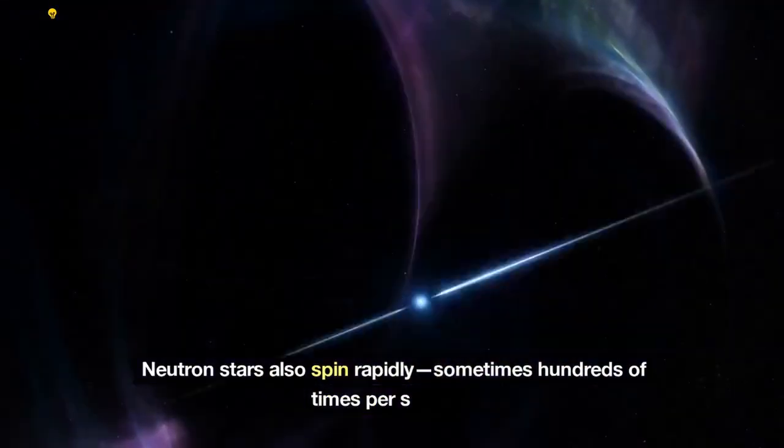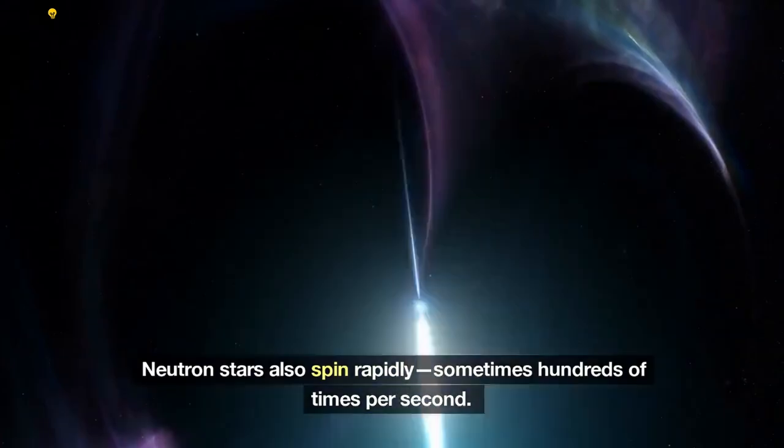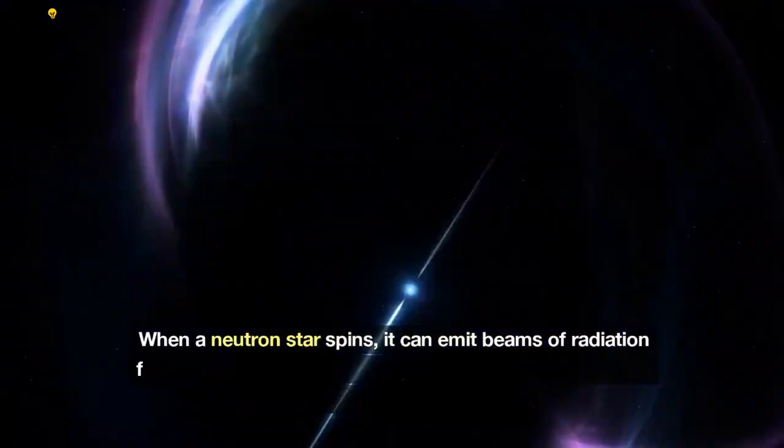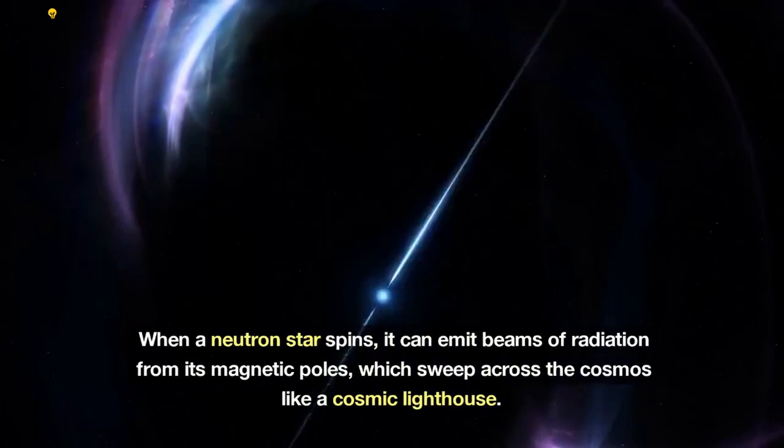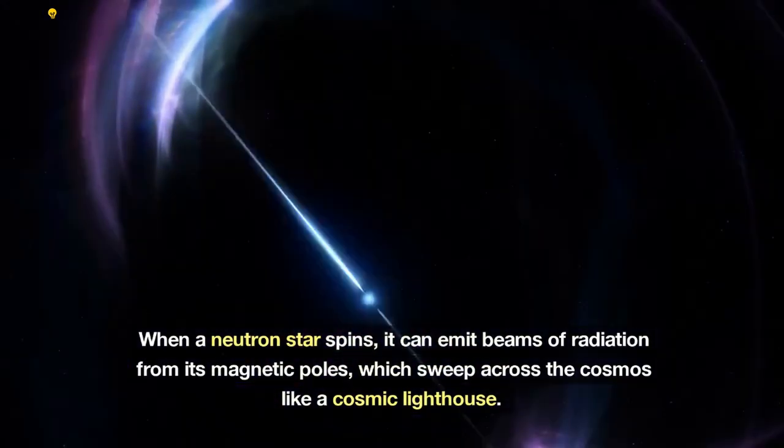Neutron stars also spin rapidly, sometimes hundreds of times per second. When a neutron star spins, it can emit beams of radiation from its magnetic poles, which sweep across the cosmos like a cosmic lighthouse.